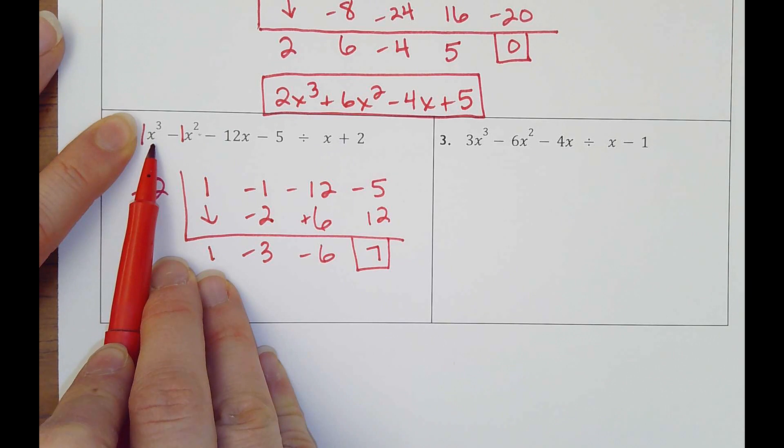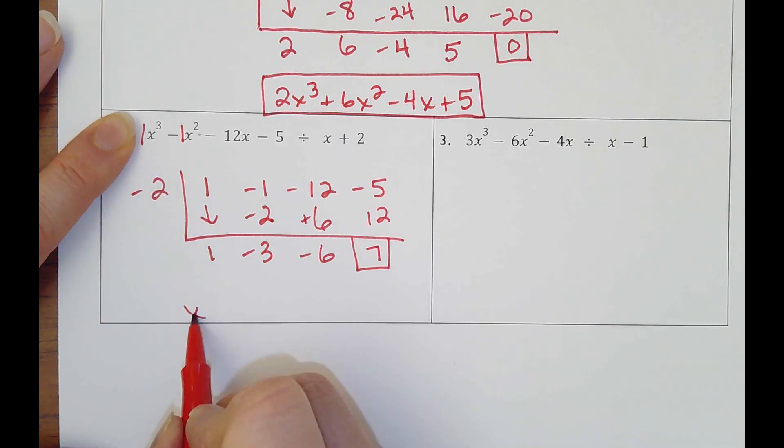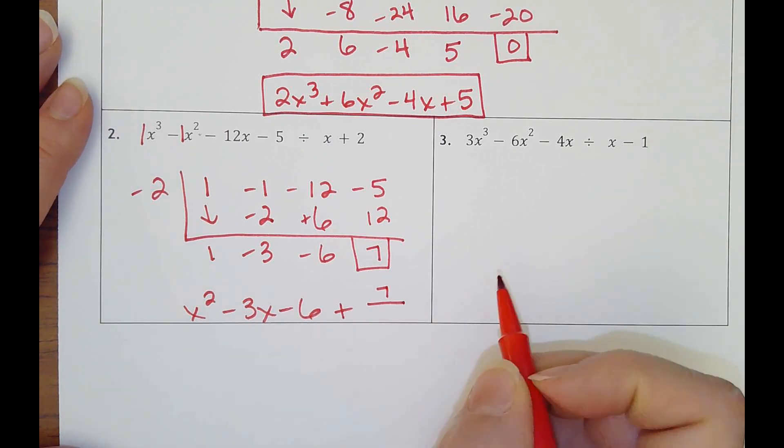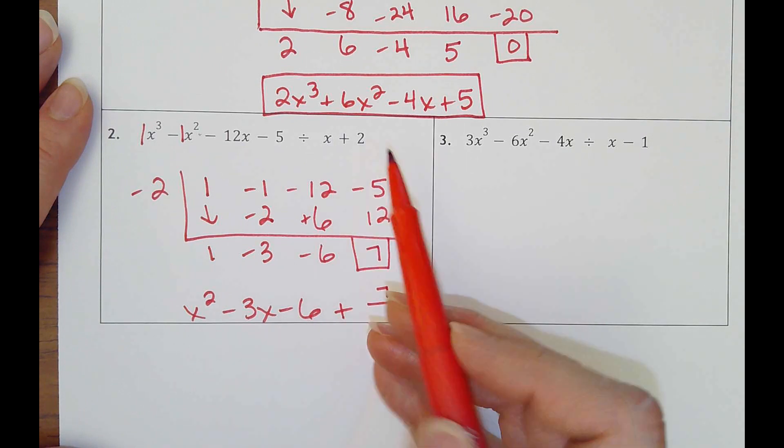So how do I write that answer? I still drop down a power. So now instead of x cubed, this is my x squared minus 3x minus 6, and then this is a positive 7, so plus 7. What did I divide by? X plus 2.